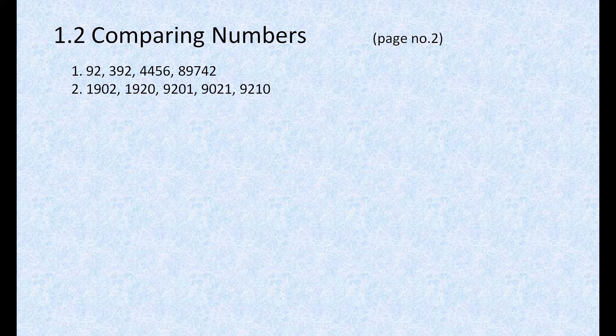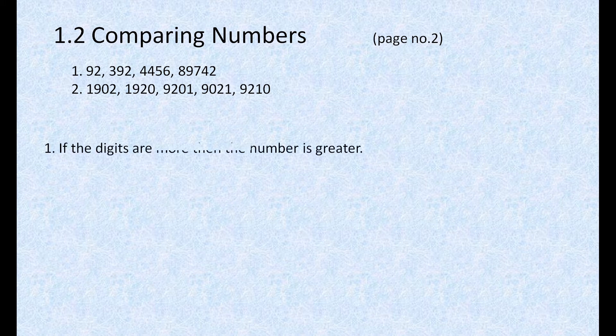In the first example, they have given four numbers: 92, 392, 4456, and 89,742. How are you going to find out which number is greater and which number is smaller? Just remember this rule: if the digits are more, then the number is greater.